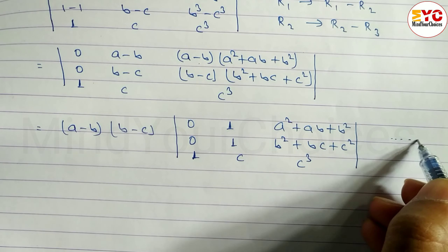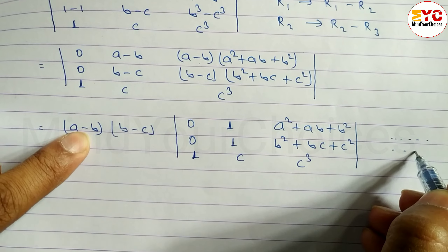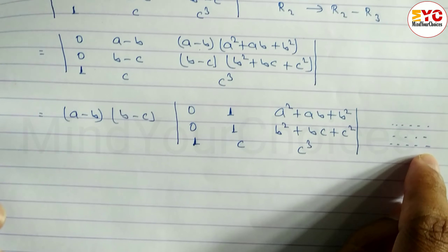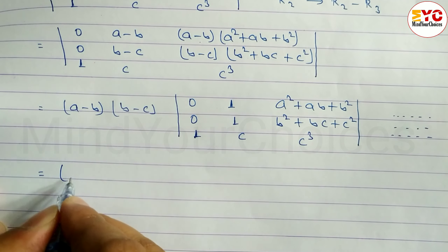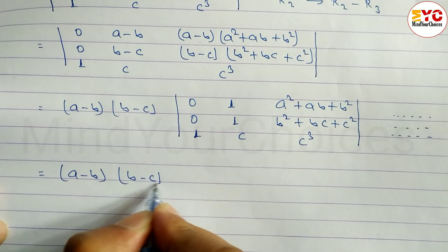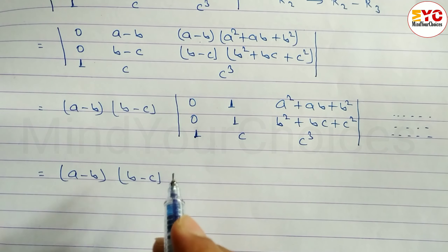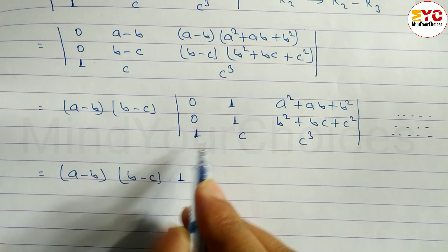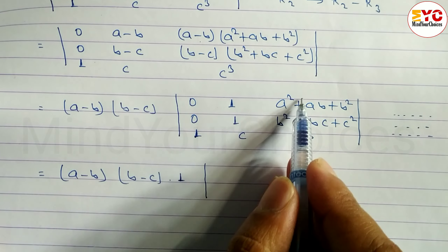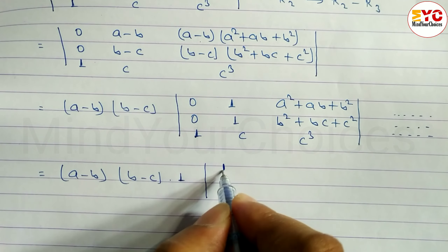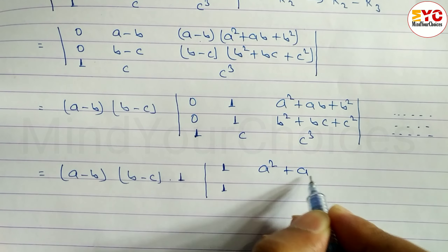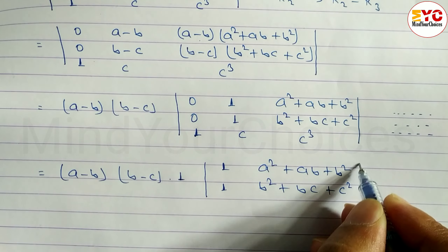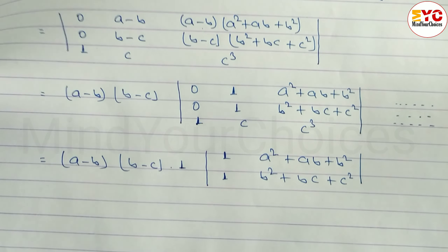Taking (a-b) common from the first row and (b-c) common from the second row. Then we write (a-b)(b-c) outside. Using cofactor expansion along the column with zeros, we find the one co-minor. The four elements of the 2×2 sub-determinant are: 1, 1, (a² + ab + b²), and (b² + bc + c²).